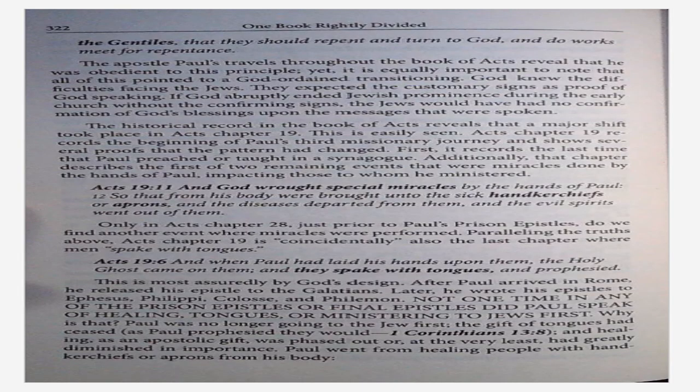Following his conversion in Acts chapter 9, Paul immediately obeyed the command of Romans 1:16 by preaching Jesus to the Jews in the synagogues. Acts 9:20 — and straightway he preached Christ in the synagogues that he is the Son of God. Why preach in the synagogues? The reason is quite simple. There was no better place to find the largest gathering of Jews in need of the gospel than in their places of worship. Paul testified to King Agrippa that he went to the Jew first and then to the Gentiles. Acts 26:19 — whereupon, O King Agrippa, I was not disobedient unto the heavenly vision, but showed first unto them of Damascus and at Jerusalem throughout all the coast of Judea, and then to the Gentiles that they should repent and turn to God and do works meet for repentance. The Apostle Paul's travels throughout the book of Acts revealed that he was obedient to this principle.